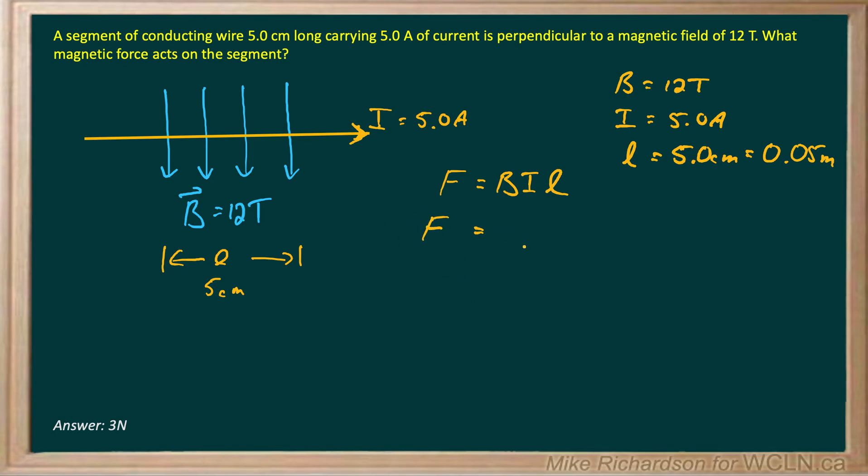And then you just solve. So I've got 12 Teslas times five amps times 0.05 meters. And when I do that I get three Newtons.